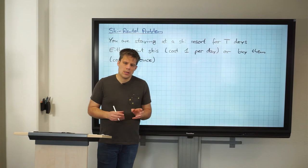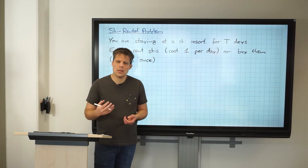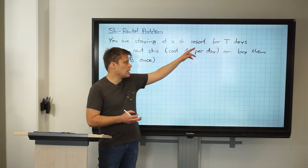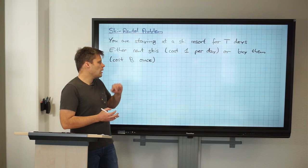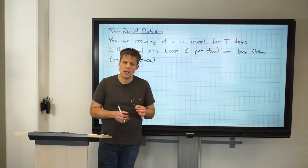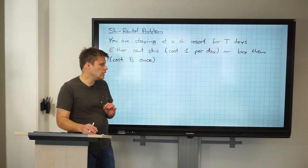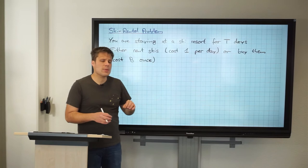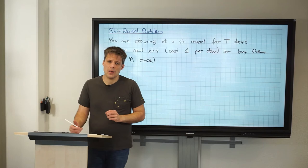So buying covers your entire stay of T days. The question is: what do you know in advance? Do you know how long you're staying at the ski resort? Do you know how expensive the skis are versus renting them? For our first algorithm, we'll only need the latter knowledge — how expensive it is to rent and how expensive it is to buy the skis.